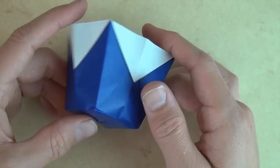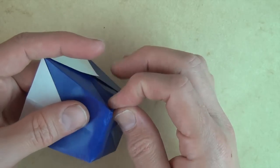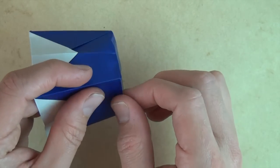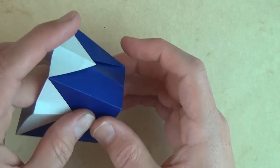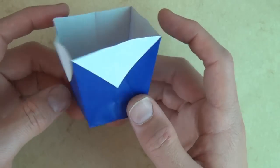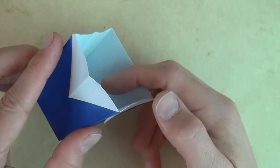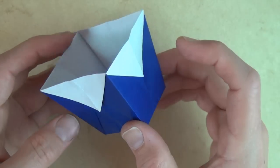So there it is, a simple origami trash can or garbage can or plant box. All right so there you have it and now you have to figure out what to put inside. All right see you later. Bye.